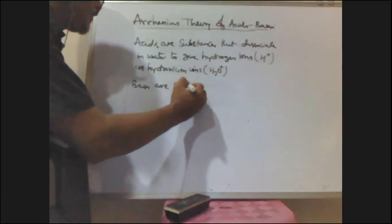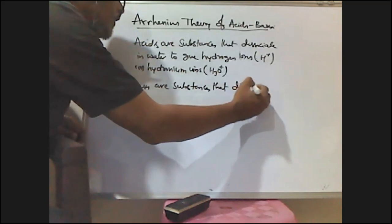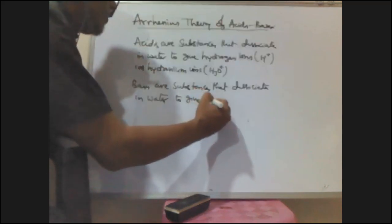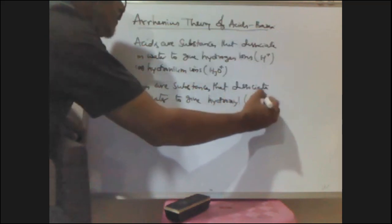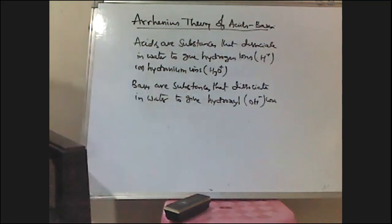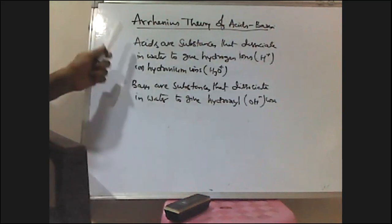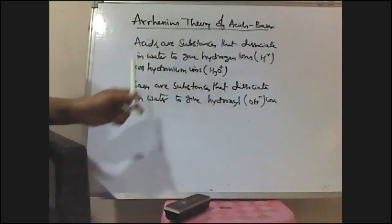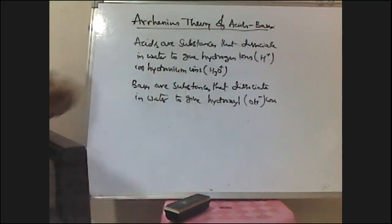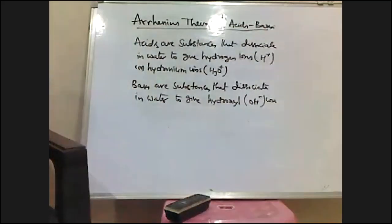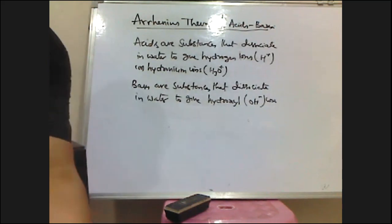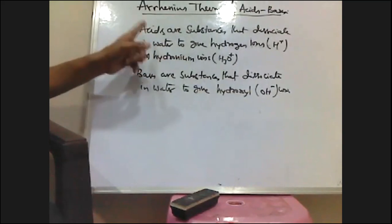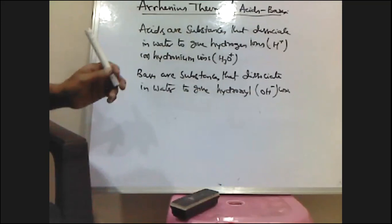Similarly, bases are substances that dissociate in water to give hydroxyl ions — OH minus ions. According to Arrhenius theory, acids are substances that dissociate in water to give hydronium ions, or the substances which increase the hydronium ion concentration in water are called acids. Similarly, the substances which increase the concentration of hydroxyl ions in water are called bases.